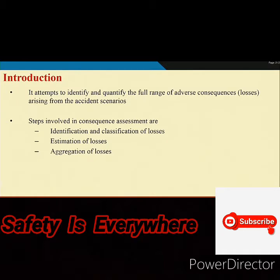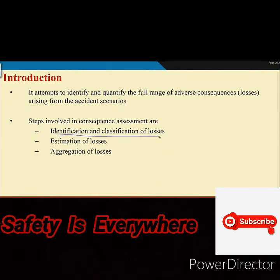Our intention is to identify the full range of adverse consequences. We are discussing safety and accident scenarios — every accident scenario will ultimately lead to different kinds of losses. Our aim is to find the full coverage of those losses and also estimate aggregate losses. The steps involved are: identification and classification of losses, estimation of losses, and aggregation of losses.